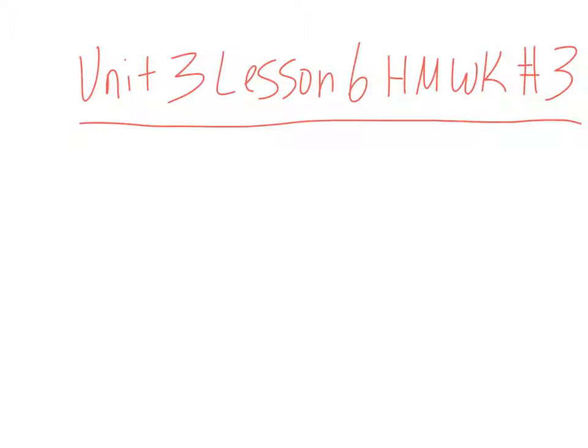I'm doing number 3 from their homework. It says Jackson had 1 and 3 eighths kilograms of fertilizer, and he used some of the fertilizer for a flower bed and he only had 2 thirds left. How much fertilizer was used in the flower bed? So this is a subtraction problem like all these will be on their homework. We're going to do 1 and 3 eighths minus 2 thirds to figure out how much fertilizer was used.